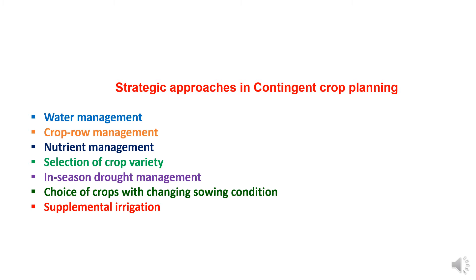The fourth strategic approach is selection of crop varieties. In slightly water-limited regions, intercropping is the best choice. A short duration and a long duration crop may be intercropped to make best use of resources. In addition to efficient resource use, intercropping imparts stability to productivity and reduces the risk of crop failure.